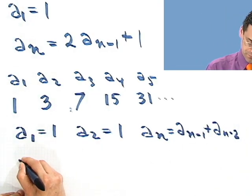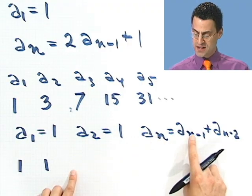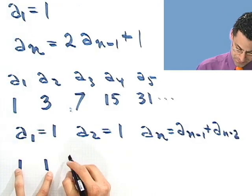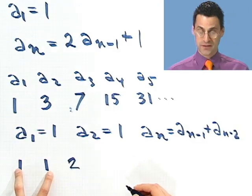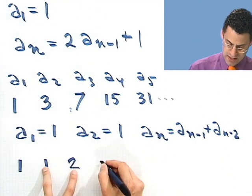So let's make a list of the terms. I have 1, 1, and what's the next one? Well, for the next one, I just add the two previous people. So I add 1 and 1, and I get 2. To get the fourth term, what do I do? I add the two previous people. So I add 1 and 2 and get 3.